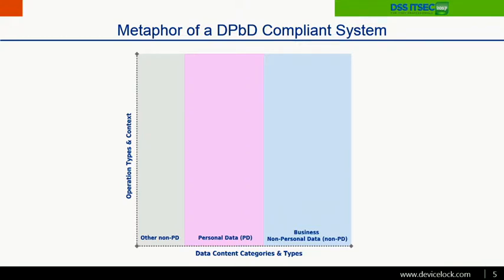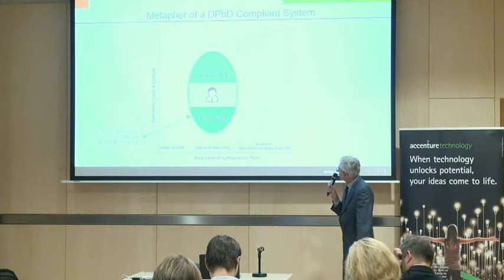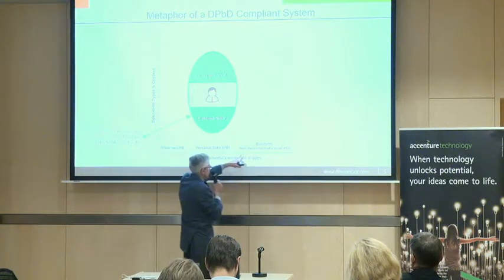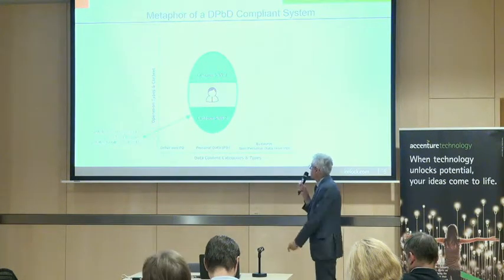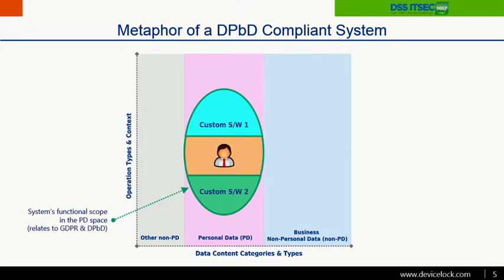For the goal of this presentation, let's present the data protection by design compliance system in a graphical metaphor. We split all the data content space into the three categories I mentioned. The other axis represents operations of different types including the specific context of every operation. In this functional space, the system's functional scope concerning personal data can be drawn as a figure.